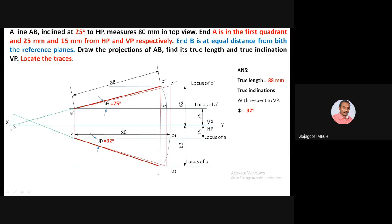To summarize the trace procedure: extend front view line A-dash B-dash as a thin line until it cuts XY — mark this as H-dash. From H-dash, draw a projector perpendicular to XY. Extend the top view line AB to meet this projector — their intersection is the horizontal trace. Where AB cuts XY, mark it as V. From V, extend the projector to meet the front view data — this gives the vertical trace.